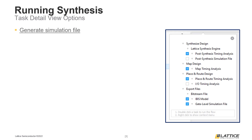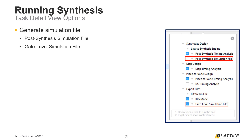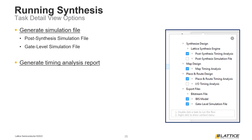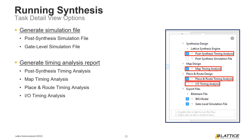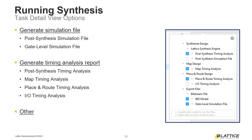The first type of option is used to generate simulation files. The post-synthesis and gate-level simulation file options will generate post-synthesis and gate-level simulation files if enabled. The second type generates timing analysis reports, including post-synthesis timing analysis, map timing analysis, place and route timing analysis, and I/O timing analysis. The last option is IBIS model, used to generate an IBIS model during the export file stage.